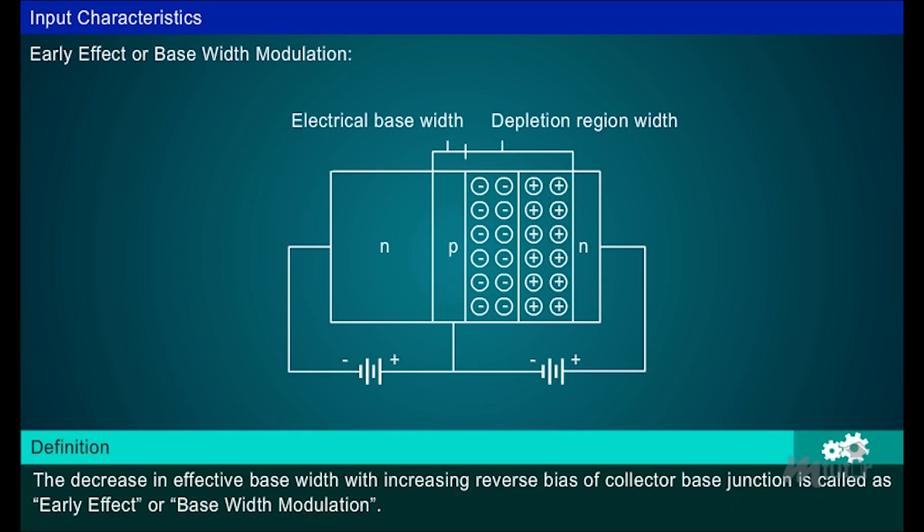Early effect or base width modulation: The decrease in effective base width with increasing reverse bias of collector base junction is called as early effect or base width modulation.